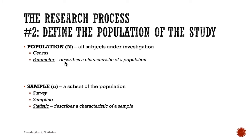Note that 'statistics' is the subject we're studying, while a 'statistic' — without an 's' — is a characteristic of a sample. So if we take the average of one sample, we call that a statistic. By contrast, if we take the average of the whole population via census, we call that a parameter.